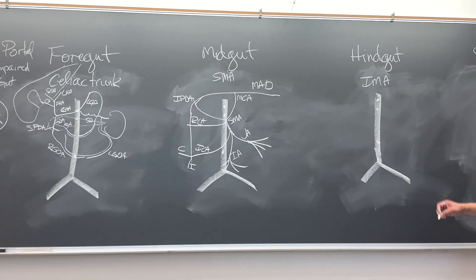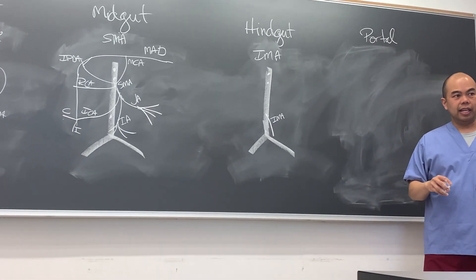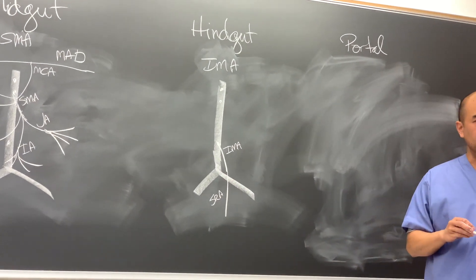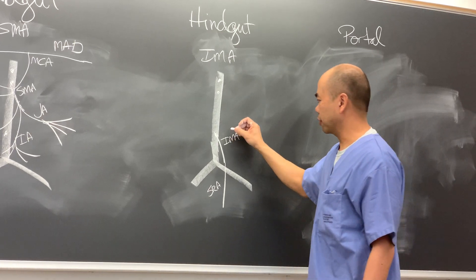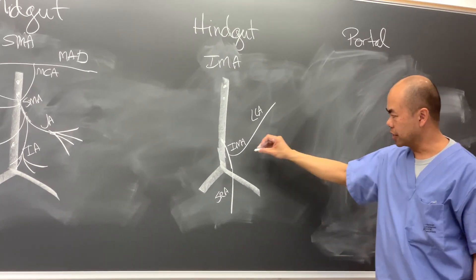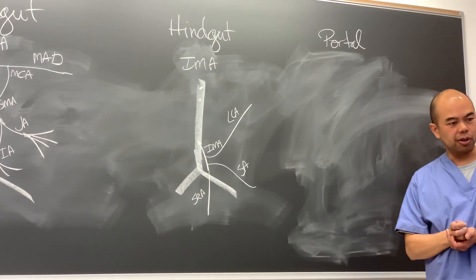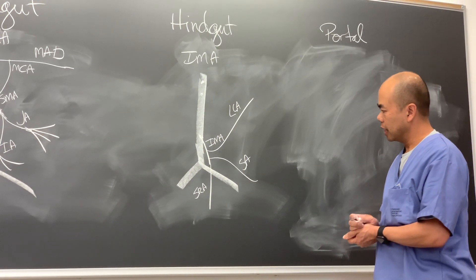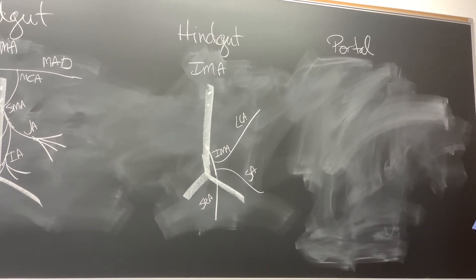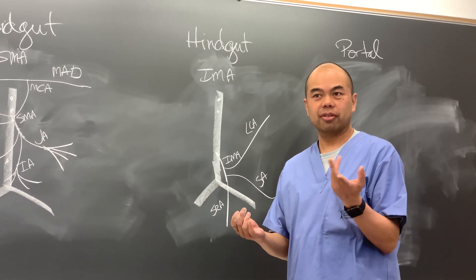The hindgut is supplied by the inferior mesenteric artery. The IMA continues on as the superior rectal artery. It gives a branch to the left colon - the left colic artery - and a branch to the sigmoid. The terms ileocecal and ileocolic are used interchangeably.